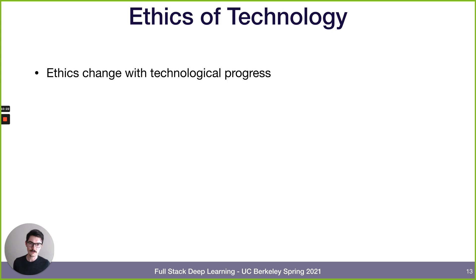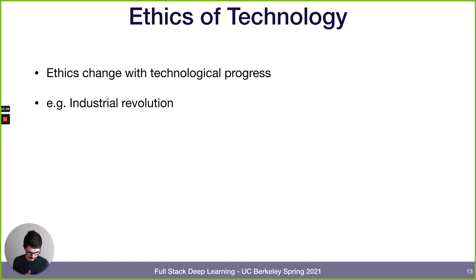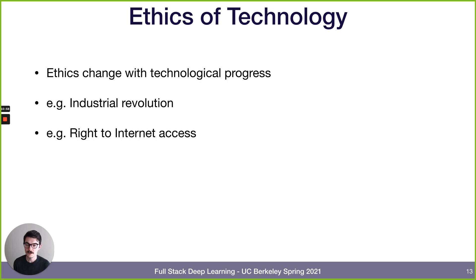When applied to technology, it's important to understand that ethics are not static — they change with what technology allows us to do. The industrial revolution radically changed the calculus of human labor: before it, all work was done by human or animal muscle; after, machines were doing work in the physics sense, leading to different ethical problems. The internet is a recent invention, but people now talk about internet access as a human right — that's a new thing.